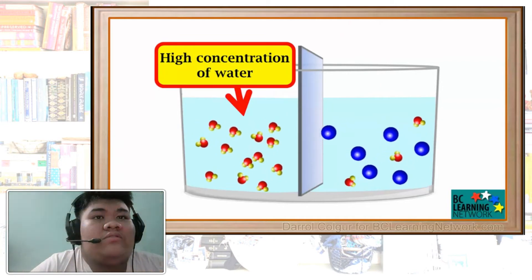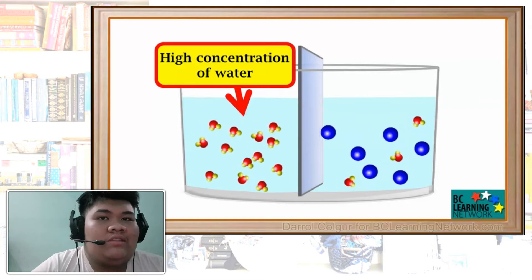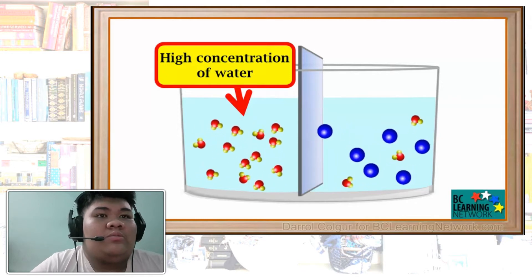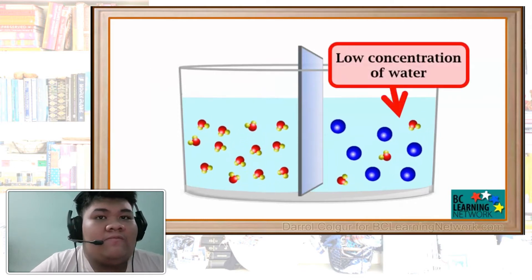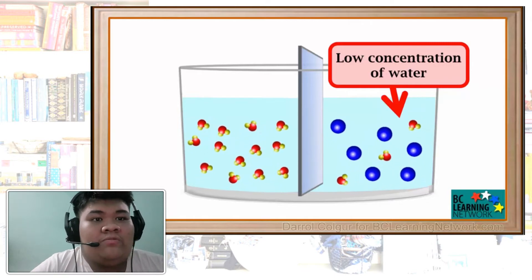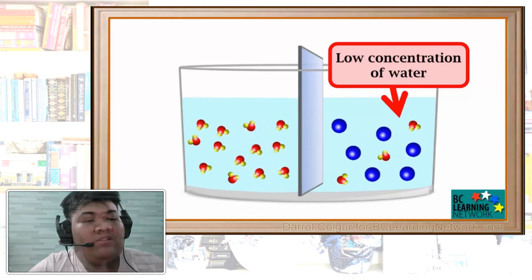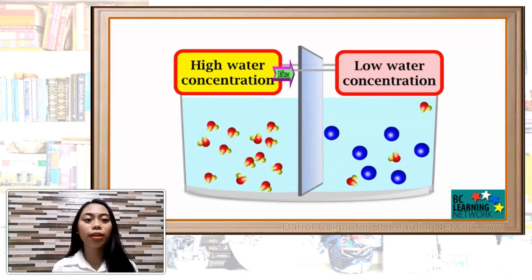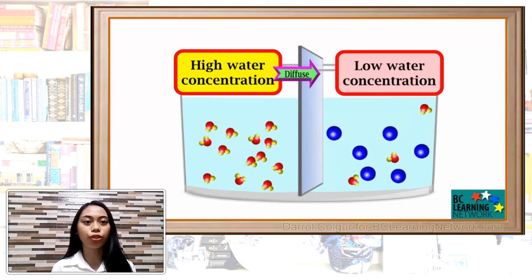Let's focus on just the water. Notice there's a high concentration of water on the left side of the barrier with 13 water molecules. But, on the right side, the concentration of water is low. There are only three water molecules showing. The rest of the space is taken up by the sugar molecules.